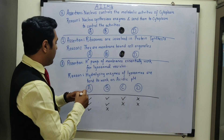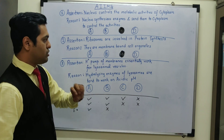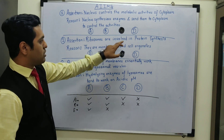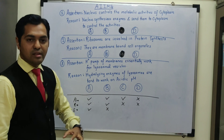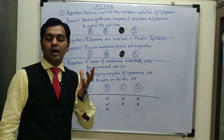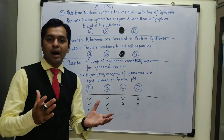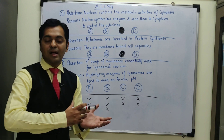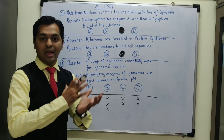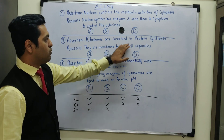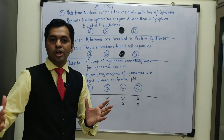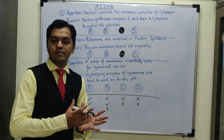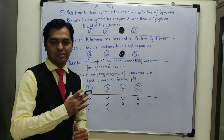The correct explanation when we say ribosomes are involved in protein synthesis should be: ribosomes bind on the mRNA and the translation process occurs — that is how ribosomes are involved in protein synthesis. They provide a binding site to mRNA and help in the process of translation.